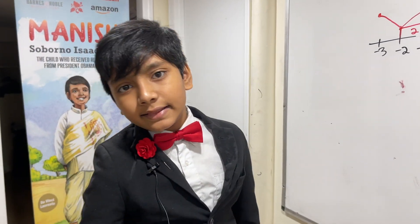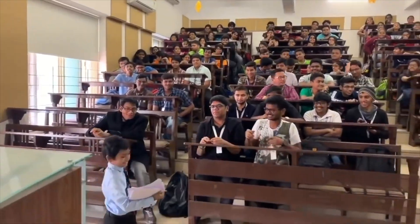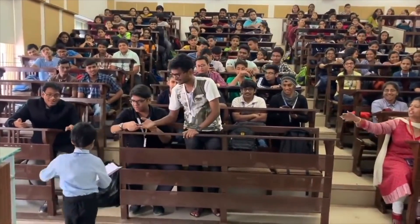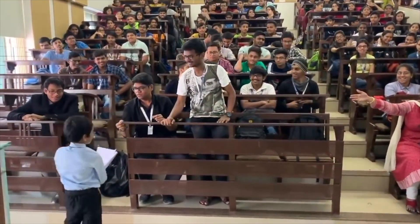So, that's it. Thank you, everybody, for watching, and we'll see you in the next one. Soborno Isaac Bari, who is known as the god of mathematics, became the youngest professor in the history of mankind.